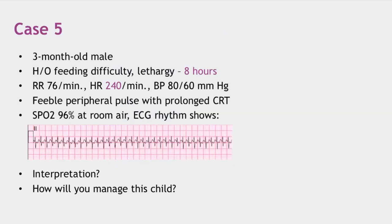This is case five: a three-month-old male child presenting with feeding difficulty and lethargy for the past eight hours. His respiratory rate is 76 per minute, heart rate is 240 beats per minute, BP is 80/60 mmHg. He has feeble peripheral pulses with prolonged capillary refill time, and oxygen saturation is 96% on room air.